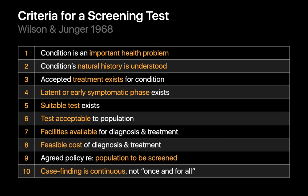Half a century ago, two healthcare leaders commissioned by the World Health Organization issued a set of principles and criteria that guide screening decisions. Is the condition we're planning to screen for important? Is the natural history of the condition understood? Can the condition be treated? Does the condition have a latent or early symptomatic phase? Does a suitable test exist for that latent or early symptomatic phase? And is the test acceptable to the population? Do the physical resources exist to diagnose and treat the condition? And is the cost feasible? Is there an agreed policy on whom to treat as patients?